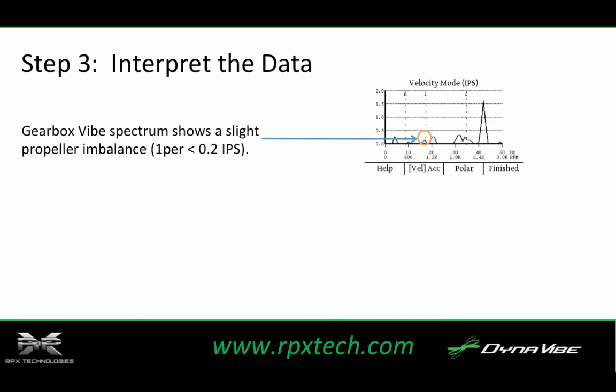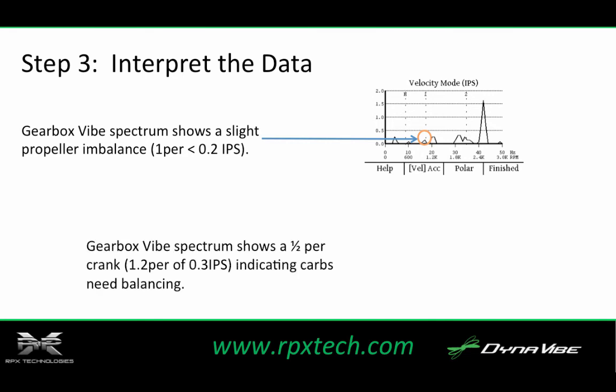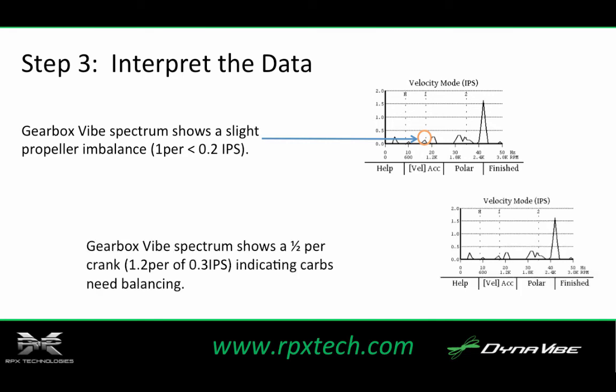In this example, we also see a vibration of 0.3 inches per second at 1.2-per, indicating that the carburetors need balancing, spark plugs are possibly fouled, the valves are sticky, or there is a possible issue with the ignition system.